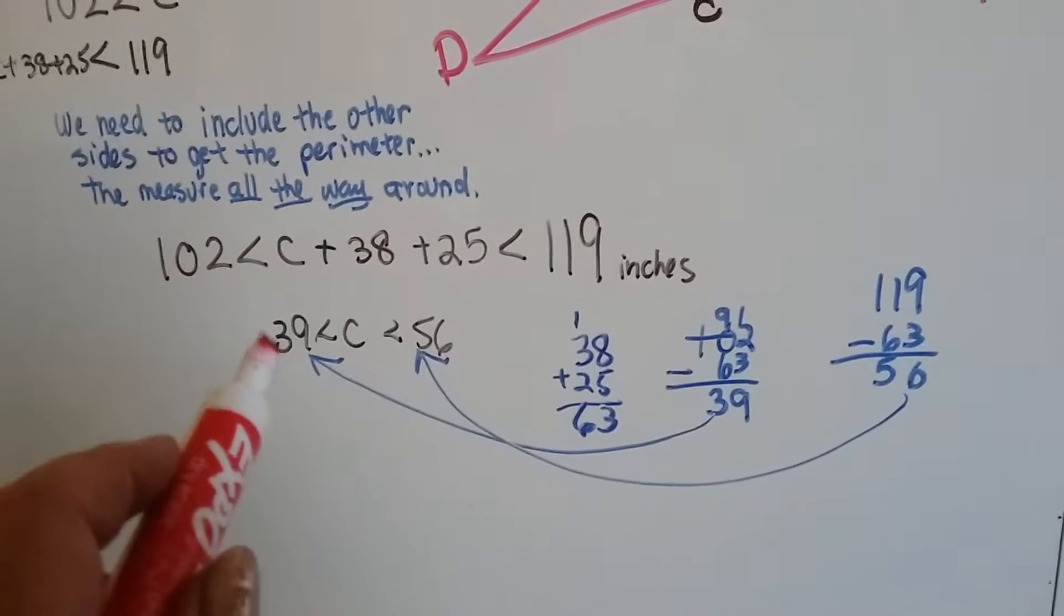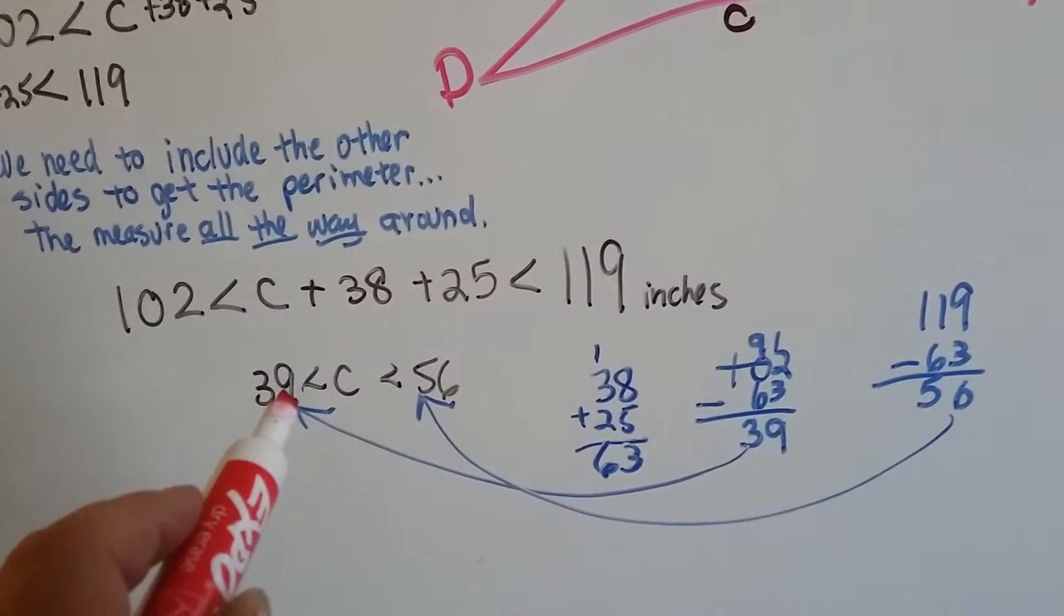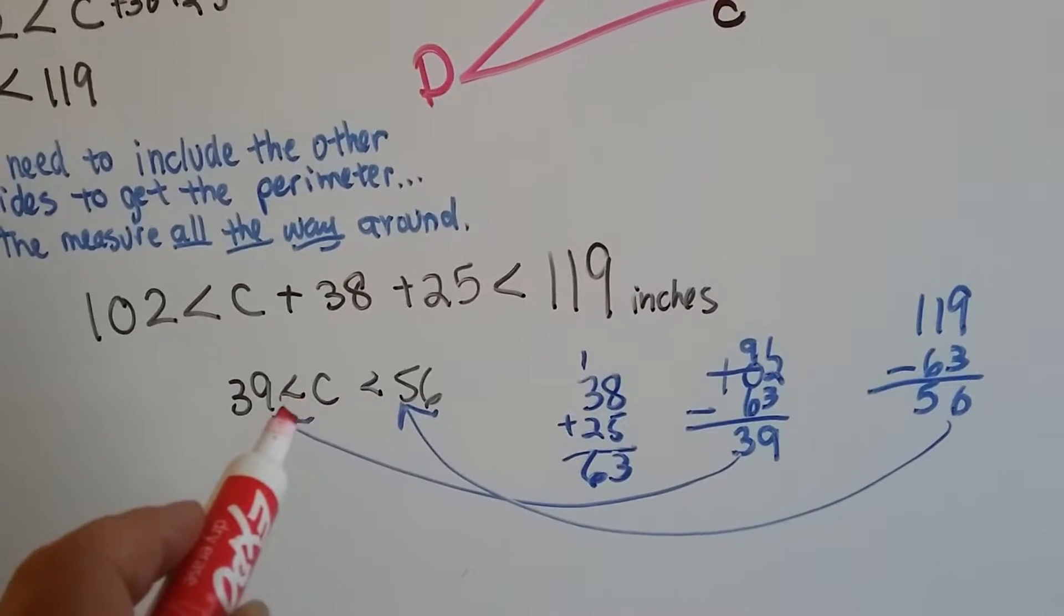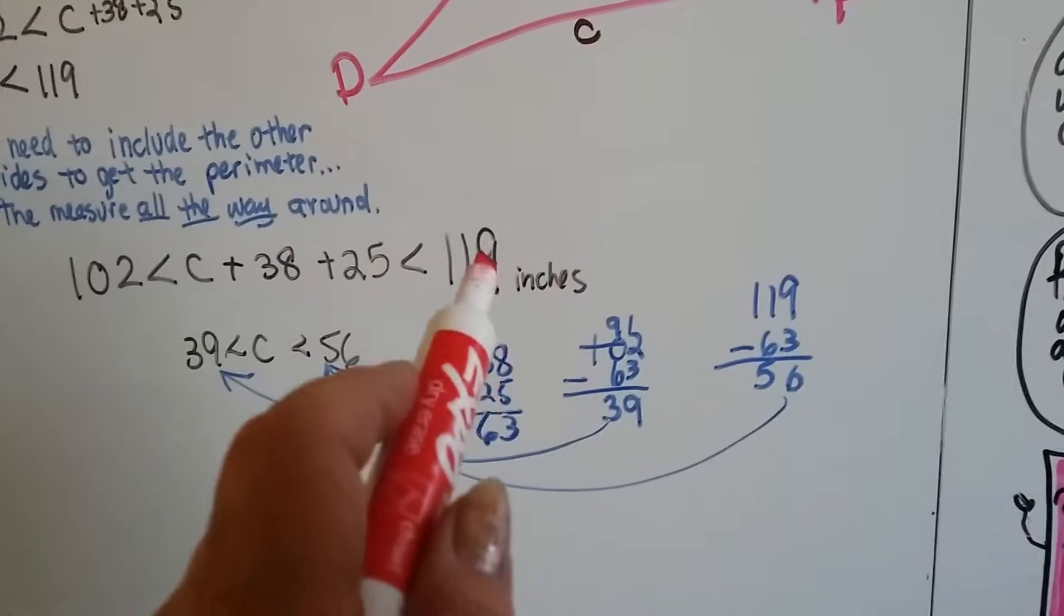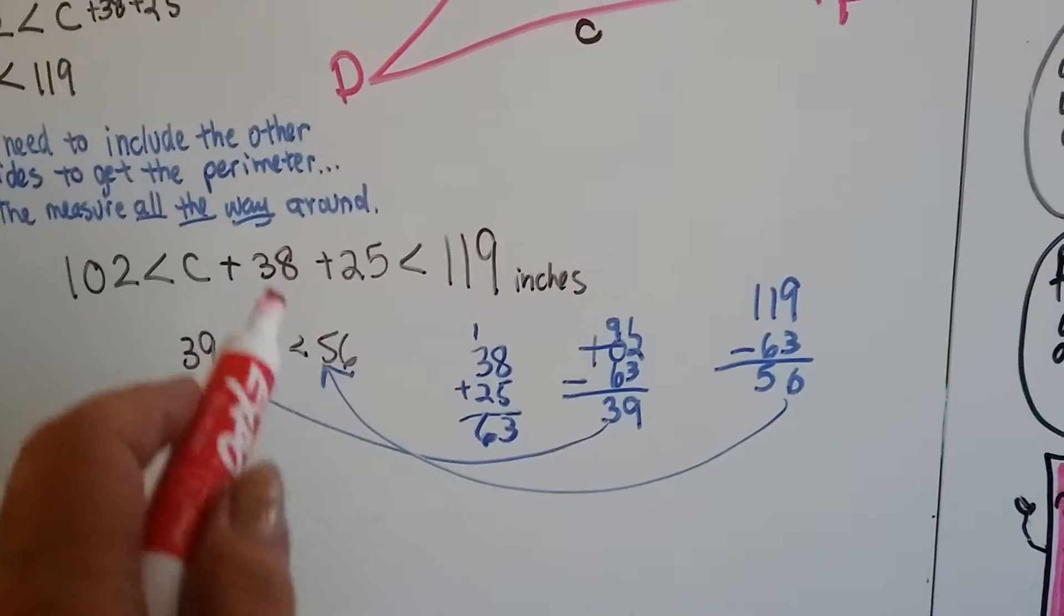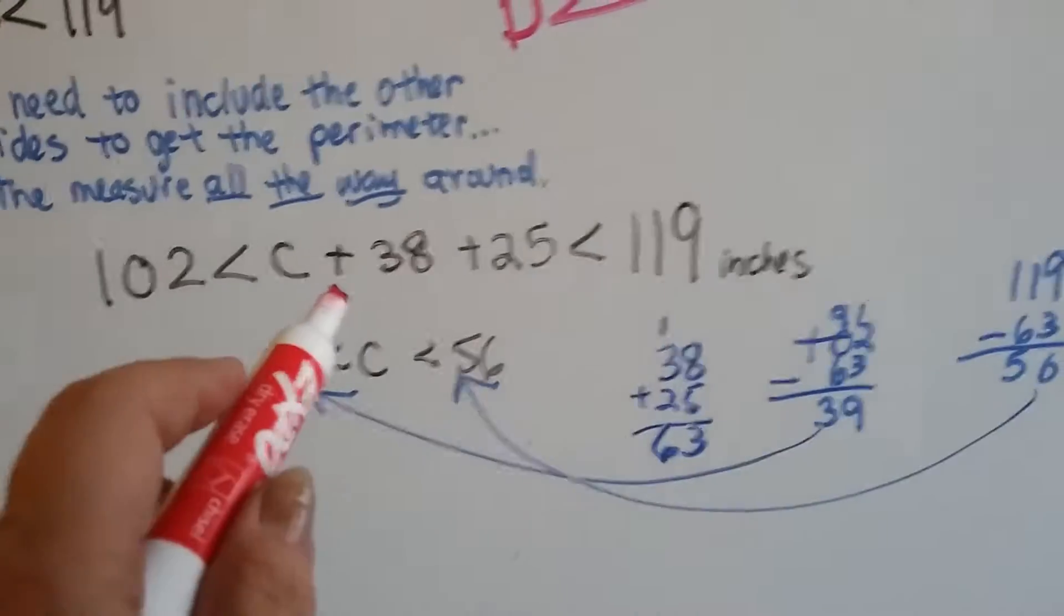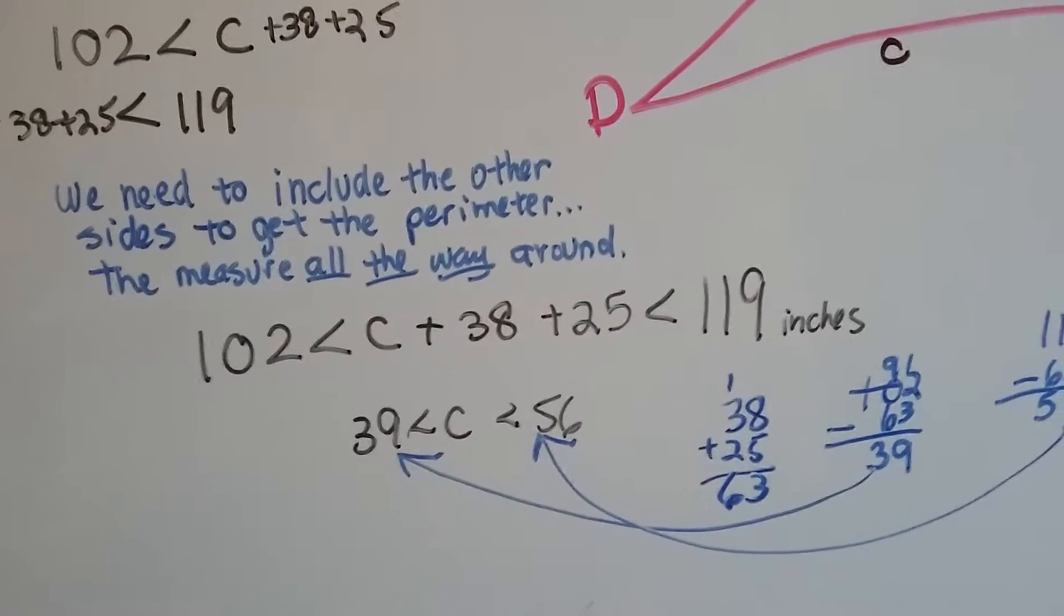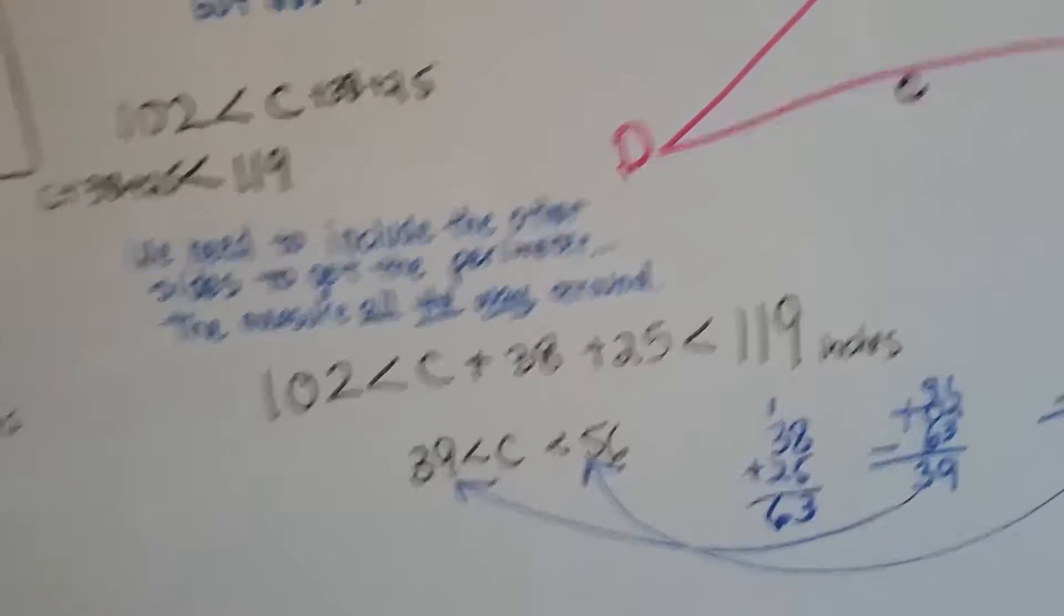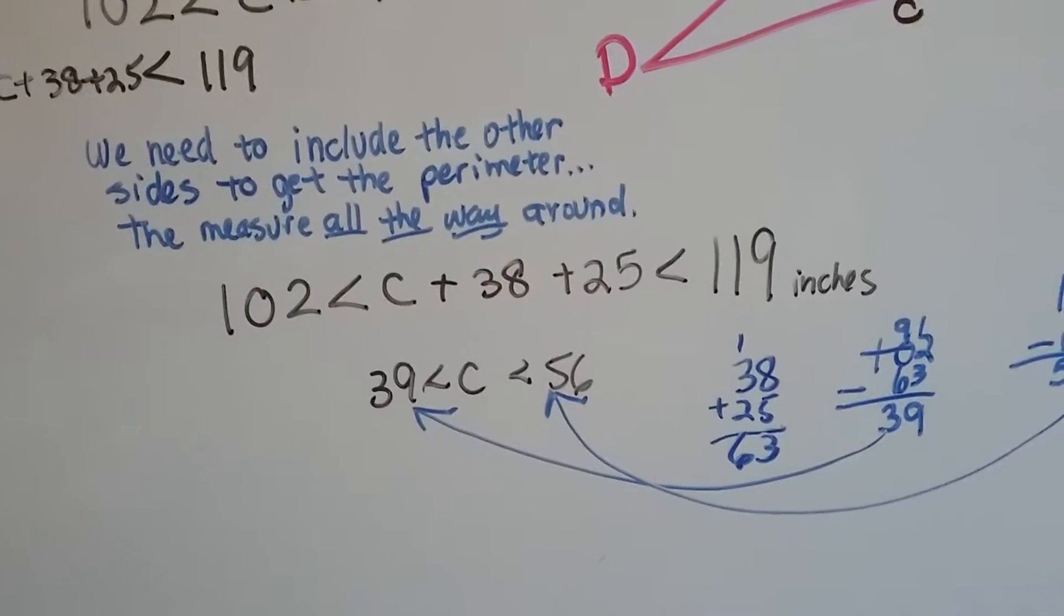So we know that side C has got to be greater than 39. And 119 minus 63, this one minus these two together, totals 56. So we know it has to be smaller than 56. So side C is somewhere between 39 and 56.